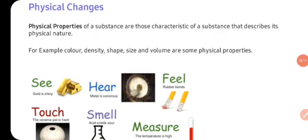First of all, we will talk about physical changes. Physical changes wo changes hote hai jab kisi bhi substance ki physical property mein koi alteration aata hai. Physical property kisi substance ki woh characteristic or property hoti hai jo uske physical nature ko describe karti hai. Those characteristics of a substance that describe their physical nature are called physical properties — jaisi ki color, density, shape, size, and volume.